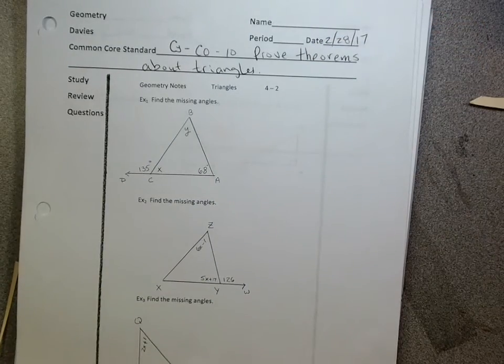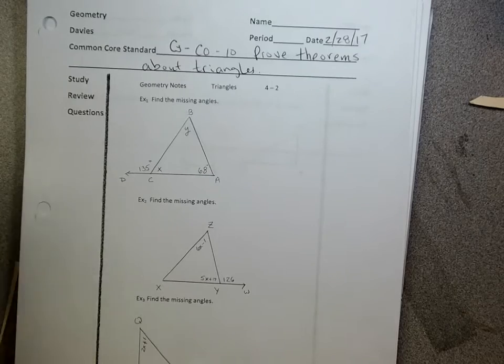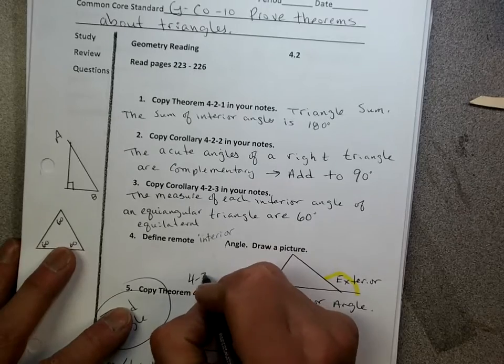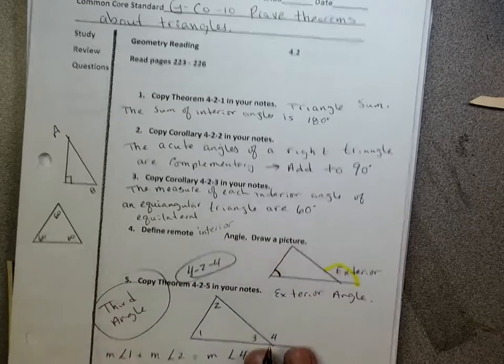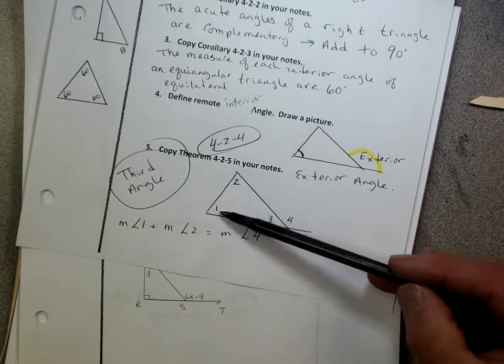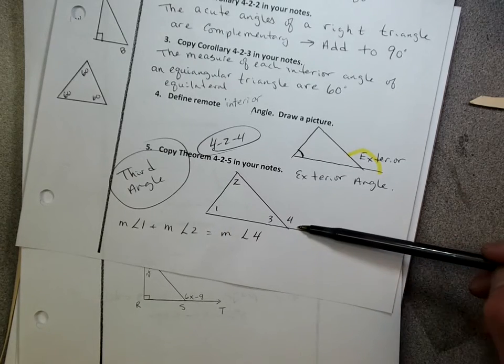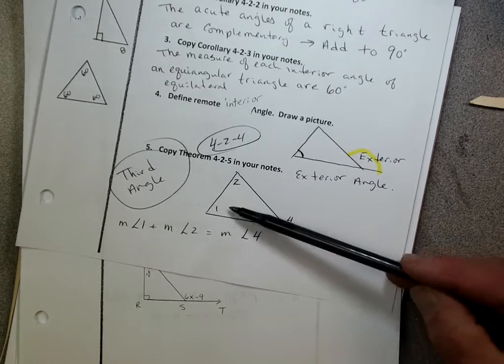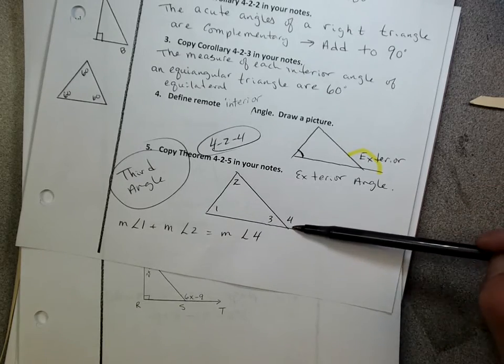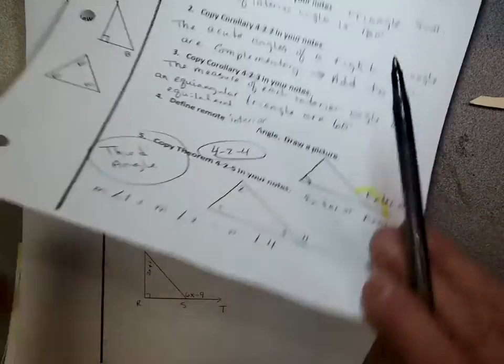So, the main one we're going to talk about is this theorem 4, 2, 4. 4, 2, 4 has to do with the remote interior. So we learned that the sum of the two remote interior will always add up to the exterior. These two remote, because they're away from it, always add up to the exterior. That's the theorem we're going to hit today more than any of them.